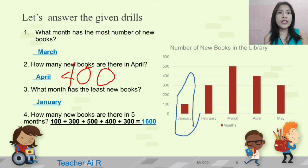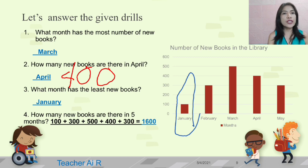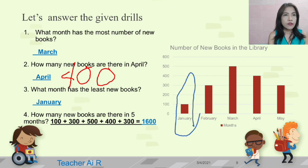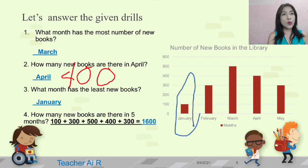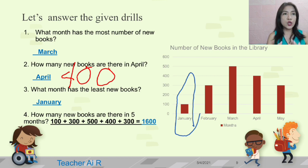Number four: how many new books are there in five months? For January it's 100, for February it's 300, for March it's 500, for April it's 400, and for May it's 300. Therefore, we have 1,600 new books in all.